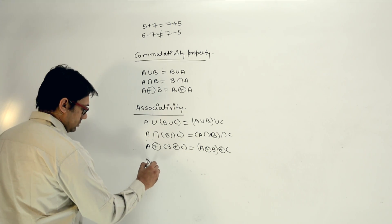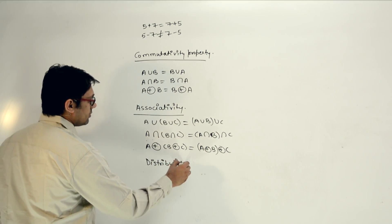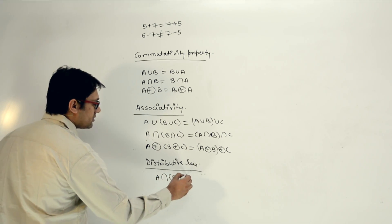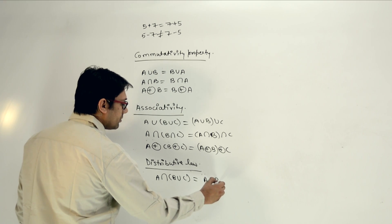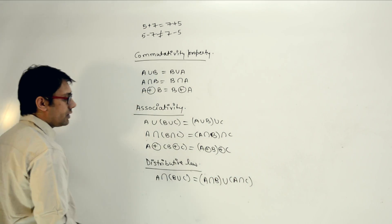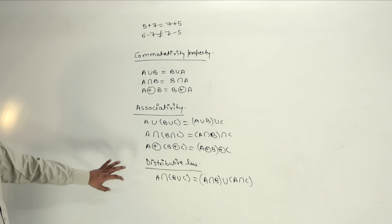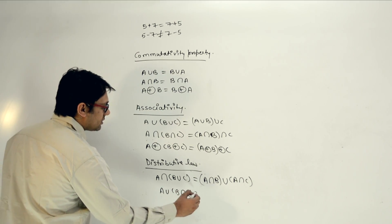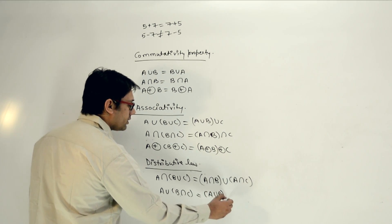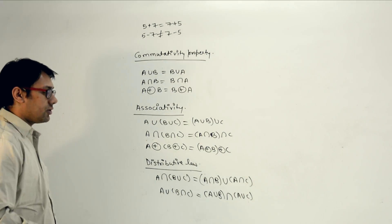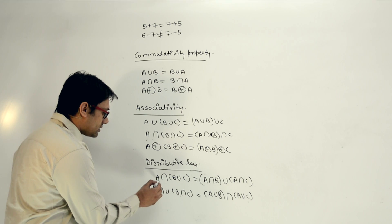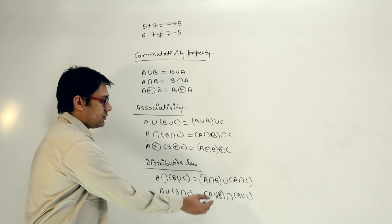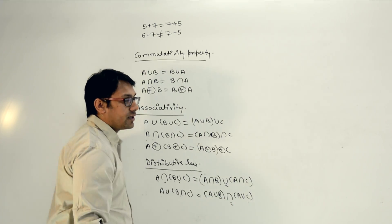The next property is called the distributive law. If you do A intersection (B union C), it can be written as (A intersection B) union (A intersection C). Similarly, A union (B intersection C) equals (A union B) intersection (A union C). We distribute A and the operator over B and C. Both the union and intersection operators are valid here.